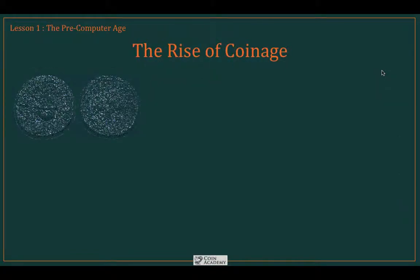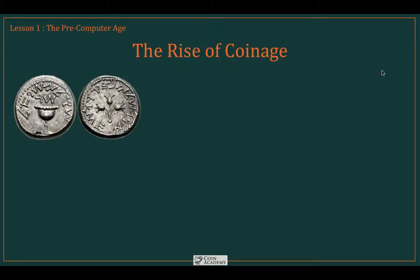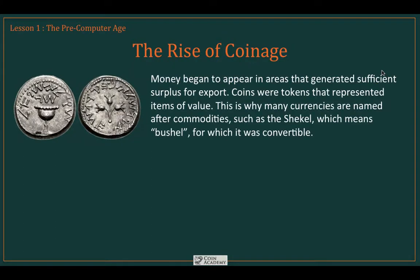The next step was in fact something we would recognize today as coins. Money first began to appear in the areas that generated sufficient surplus for export. These coins became tokens that represented particular items of value, typically in the export chain. That's why many currencies were named after commodities, such as the shekel — shekel actually means bushel, and early on, a shekel coin was convertible to a bushel of a particular grain.